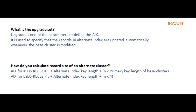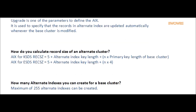Question: What is the upgrade set? Answer: UPGRADE is one of the parameters used to define the alternate index. It is used to specify that the records in the alternate index are updated automatically whenever the base cluster is modified.